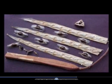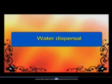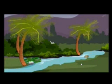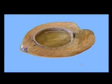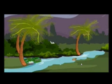Next is water dispersal. Seeds of plants growing near or in water are dispersed by water. They have seeds and fruits that float in water. For example, water lily, lotus, and coconut. The coconut falls into sea water and is carried by waves to far-off places, and then it starts growing at that place.